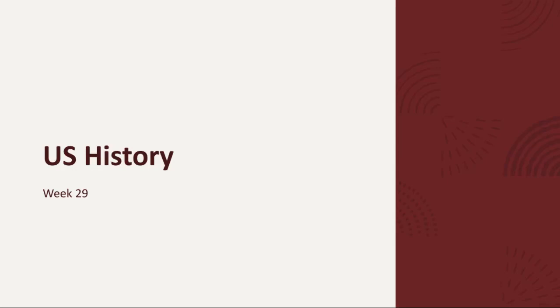Hi and welcome to week 29 of US history. This week we'll be delving into the tumultuous events of the 1930s, a period marked by the rise of dictatorships and escalating global tensions. We'll be exploring five key topics that shaped the course of world history during this pivotal era.